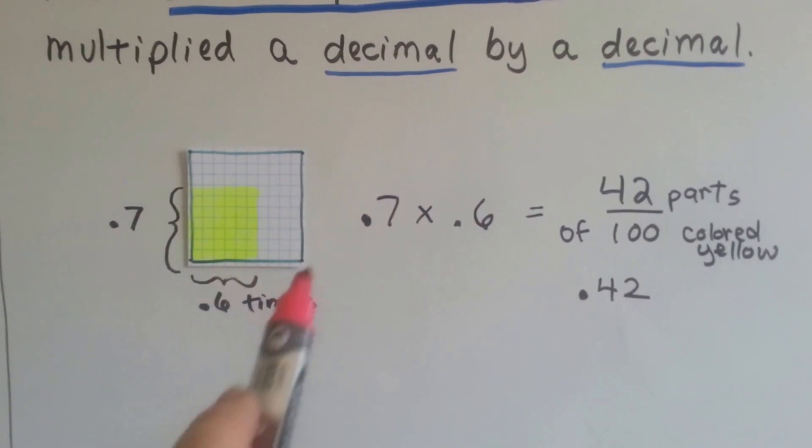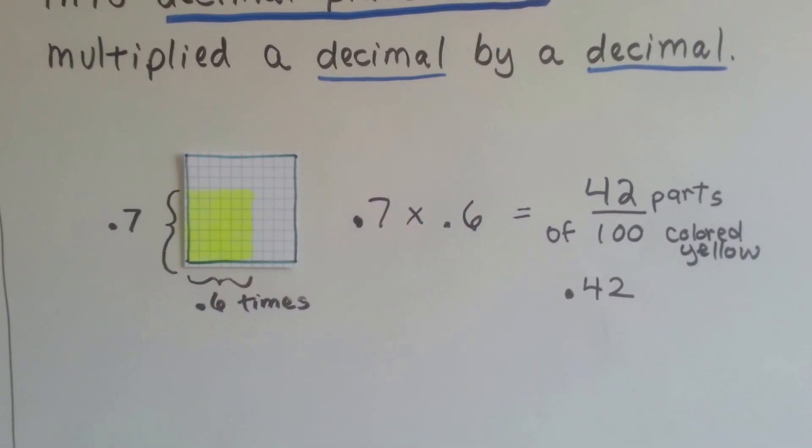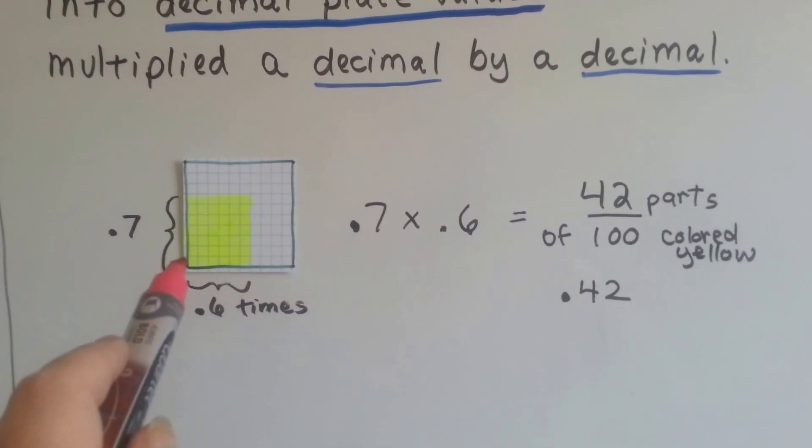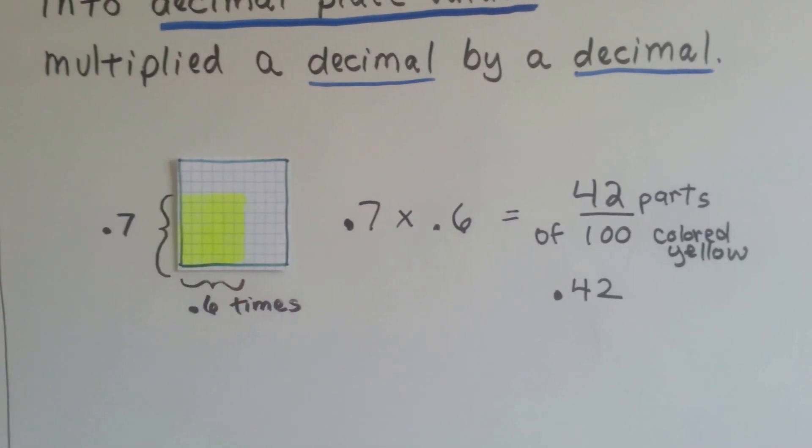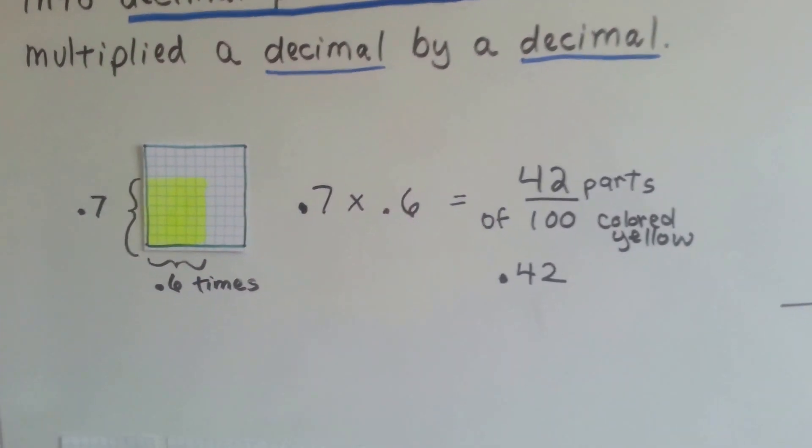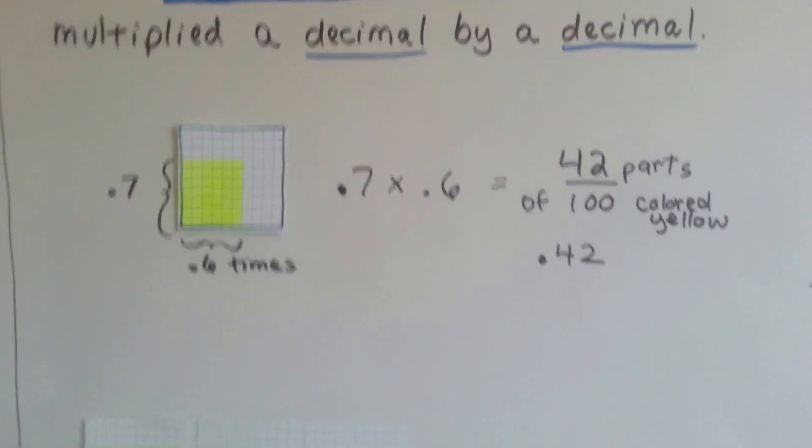Can you imagine how tiny it would be if it was seven hundredths by seven hundredths? Or six hundredths? Seven hundredths would be just seven little squares filled in out of this hundred. See? Be much tinier. It would be 4.2 of these squares would be filled in. That's how tiny it would be.